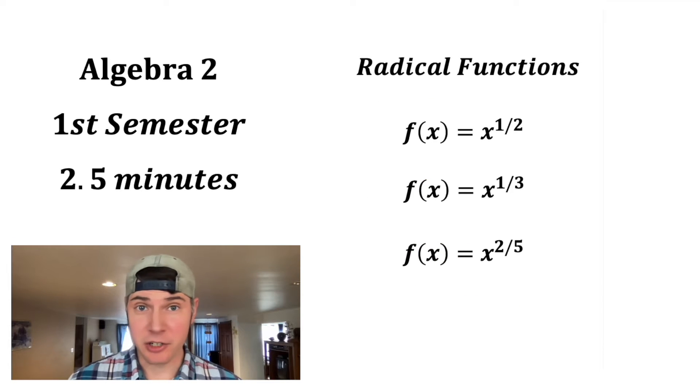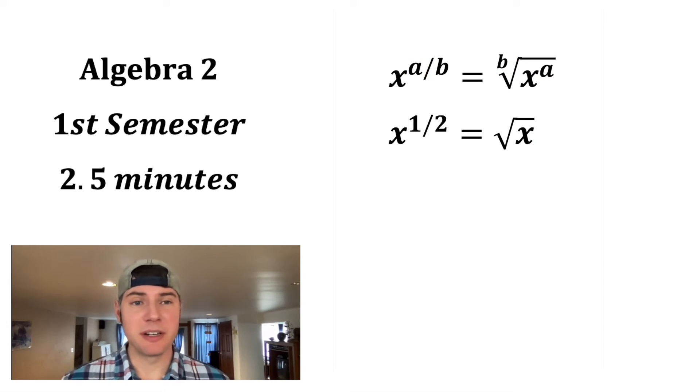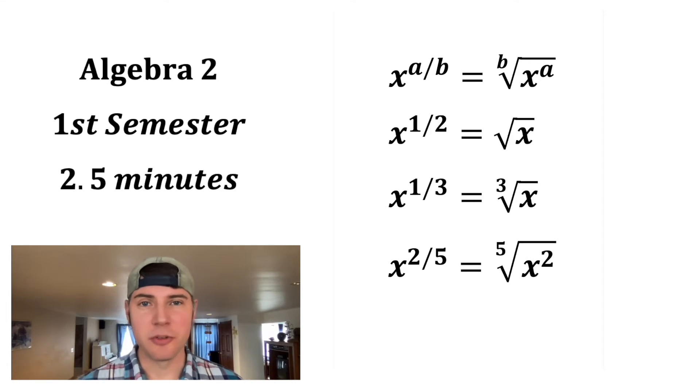If we start doing fractional exponents, we call these radical functions. Whenever you have a fractional exponent, the denominator is the index of the radical and the numerator is still the exponent. So the square root of x could be written as x to the one-half, the cube root of x could be x to the one-third, and the fifth root of x squared would be x to the two-fifths.